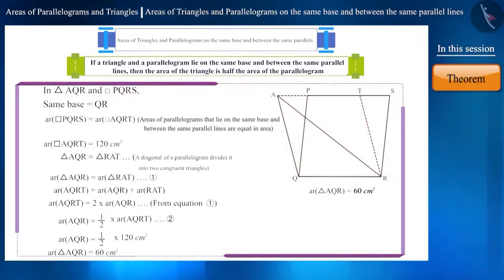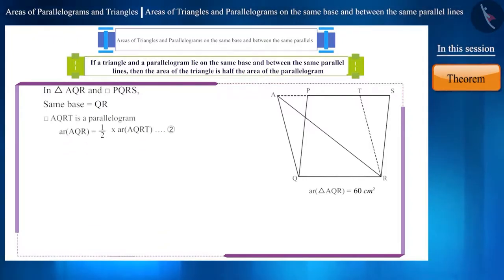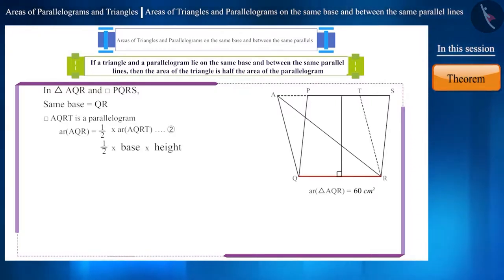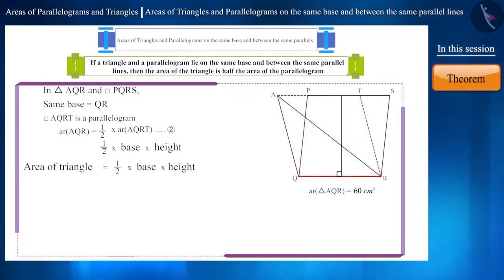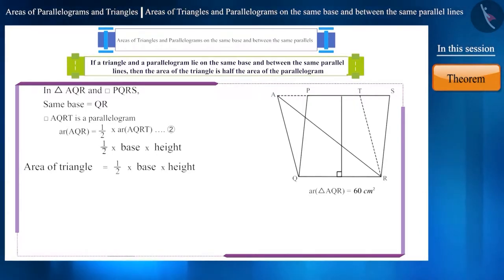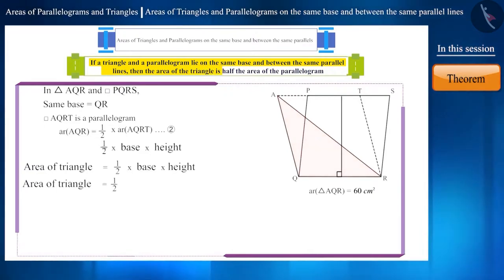If we look carefully at equation 2 of this example, we know that the formula for the area of a parallelogram is base into height. So with the help of this formula, we can also find the formula for the area of a triangle, which will be half into base into height. And since the triangle and parallelogram lie on the same base and between the same parallel lines, the area of the triangle will be half the area of the parallelogram.